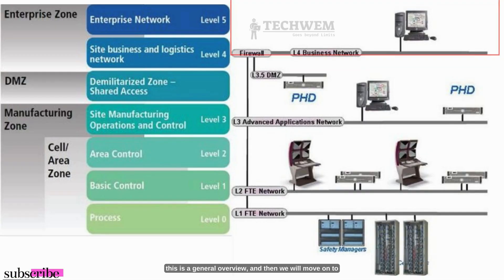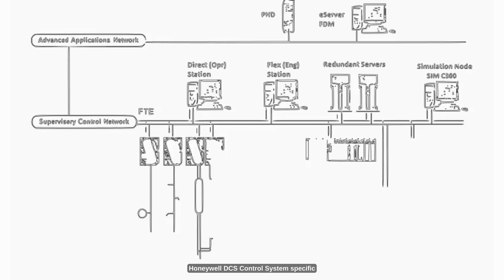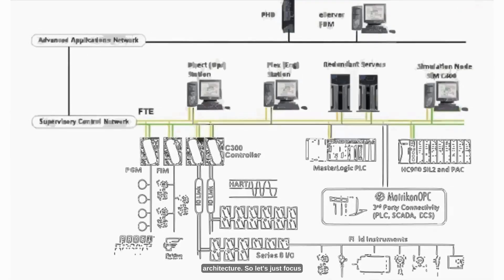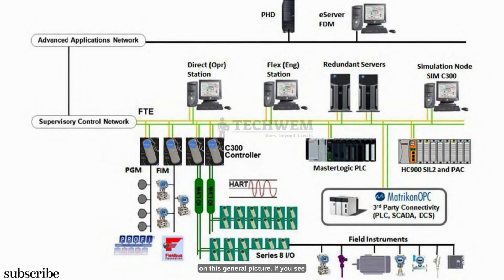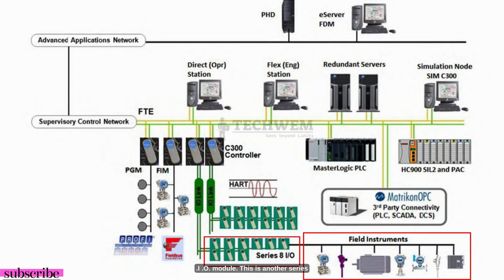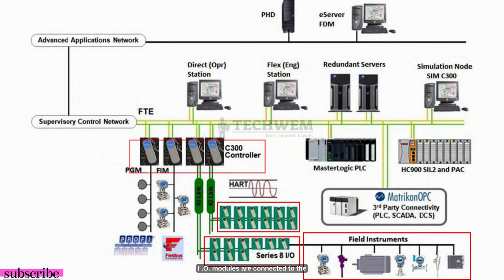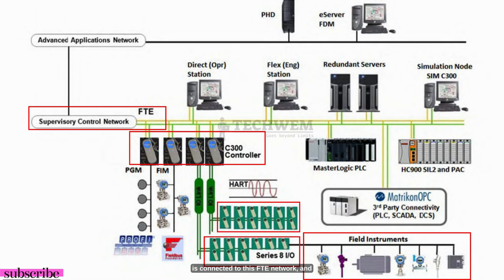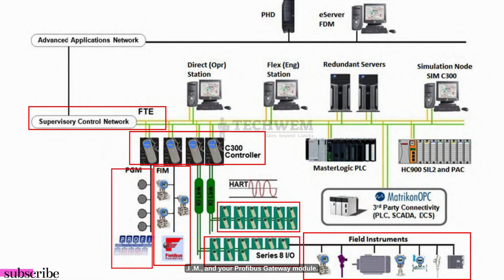This is a general overview, and then we will move on to Honeywell DCS Control System specific architecture. From the bottom, we have field instruments coming in. Those field instruments are connected to the I/O modules — these are Series 8 I/O modules, they could be Series C I/O modules. Those I/O modules are connected to the DCS controllers, and that controller is connected to the FTE network. The same goes for your Fieldbus devices, FIM, and your Profibus Gateway module.